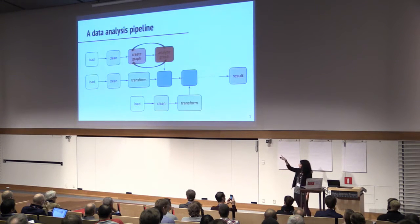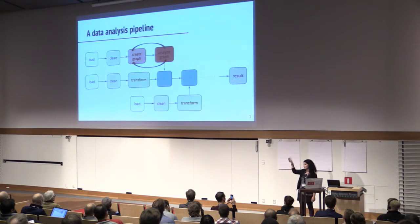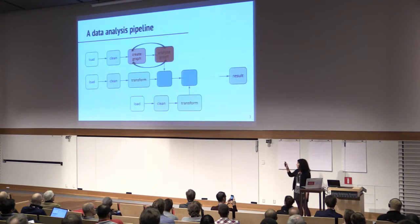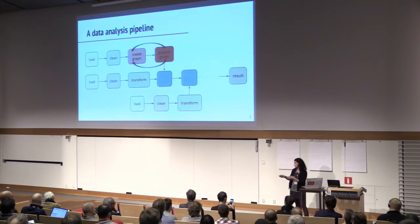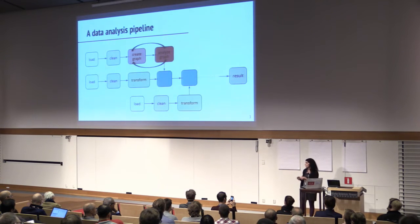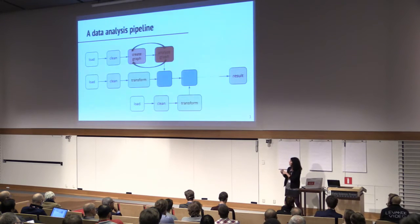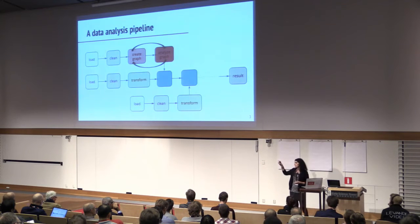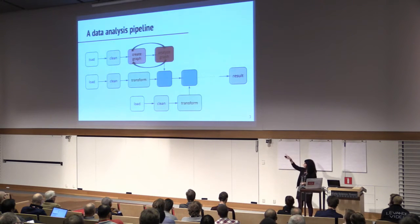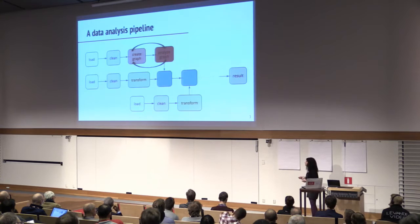I want you to pay attention to the loop between creating the graph and analyzing the graph. A very typical problem in these pipelines is that it's hard to get the graph right on the first try. You might want to model different interactions as a graph, weigh them differently, and every time you have a new graph, you might also need to change the algorithm. So you might need to iterate several times until you get this part of the pipeline right.